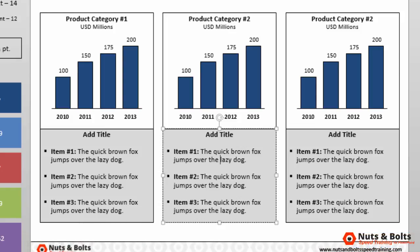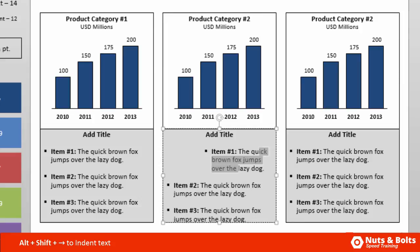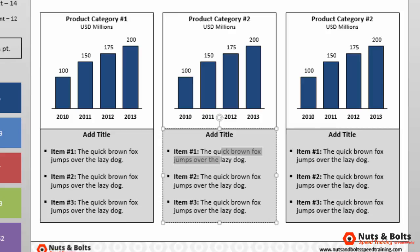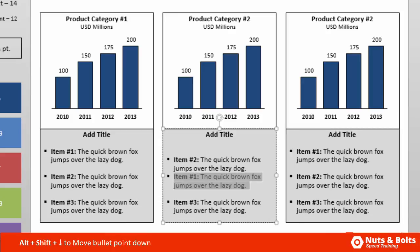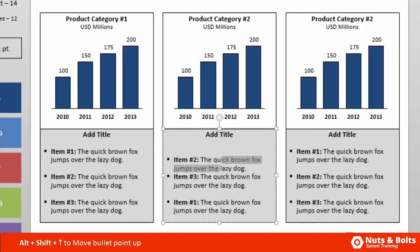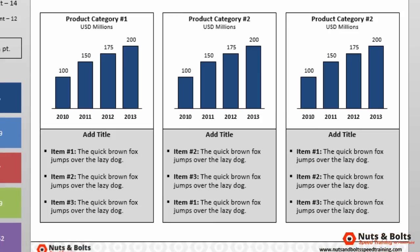Another great set of keyboard shortcuts for working with blocks of text involves the Alt and Shift keys plus your arrow keys. Alt+Shift+Right will indent or promote your bullet point, the same as using Tab. Alt+Shift+Left is the same as Shift+Tab to move bullet points to the left. You can also use Alt+Shift+Down Arrow to move an item down within your list of bullets, and Alt+Shift+Up Arrow to move items up. This lets you quickly rearrange your bullet list without having to copy, cut, paste, or retype any text.